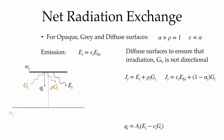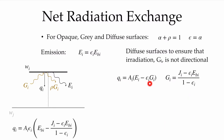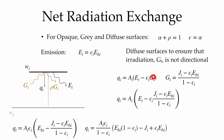Now let's expand our radiosity again. The radiosity is the emission from the surface, εi·Ebi, plus the amount reflected, which is (1 − α)·Gi. We can substitute in emissivity for absorptivity because of the gray surface approximation, and rearrange to get an expression for the irradiation Gi in terms of the radiosity, the black body emission Ebi, and the emissivity εi. We then substitute this irradiation expression into our expression for total heat transfer from surface i.